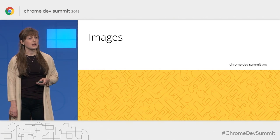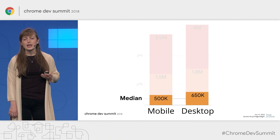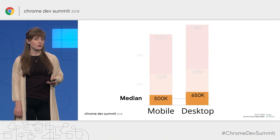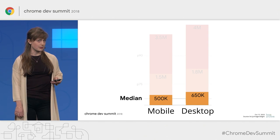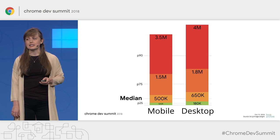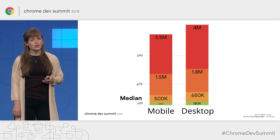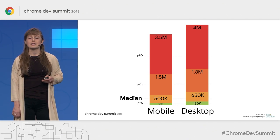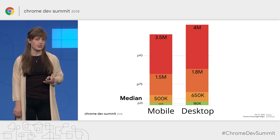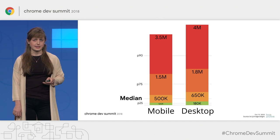So let's start by talking about images. Images are taking over the web. On many sites, images alone would consume the entire performance budget, and on some sites, it would far exceed that. The reason why these numbers are so bad lies in the fact that performant images are the result of many steps and optimizations, and as a result, they're not going to happen accidentally.